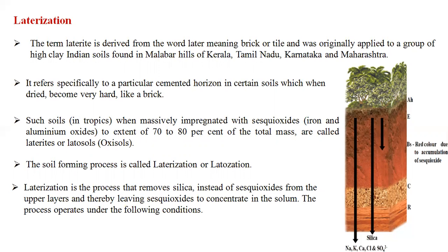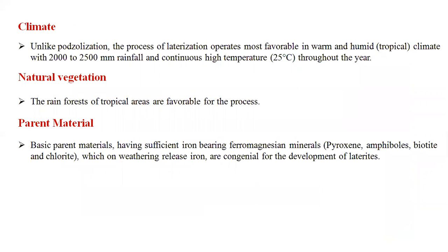Unlike podzolization, laterization operates in a warm and humid climate with around 2000–2500 mm of rainfall and continuous high temperatures of 25°C throughout the year. Tropical rainforest vegetation highly supports this process. Basic parent materials containing ferromagnesian minerals like pyroxenes, amphiboles, biotite, and chlorites release iron upon weathering, which supports laterite development.